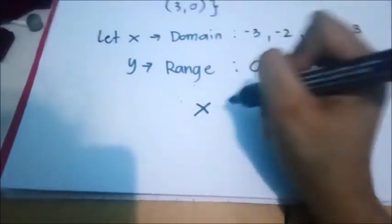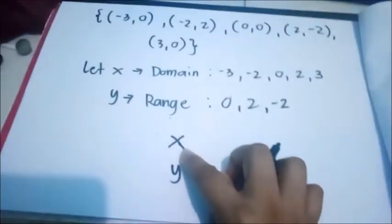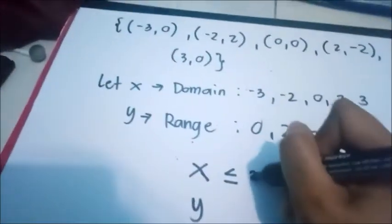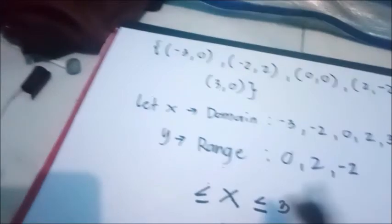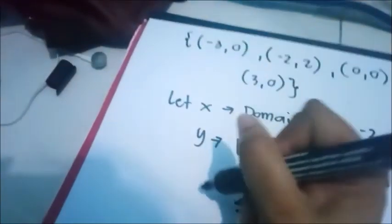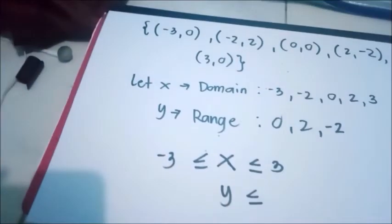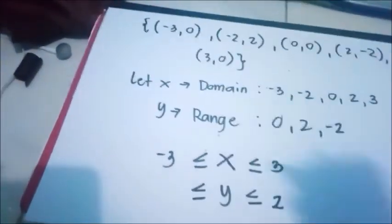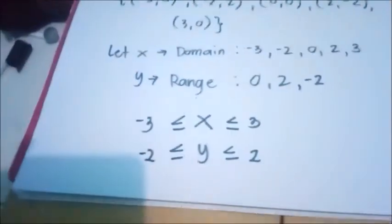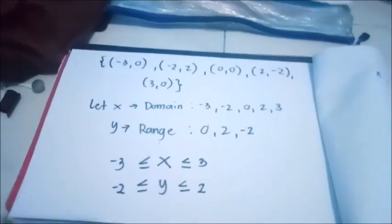Now let us have the value of all domain and the range. What is the maximum number of the domain? We have 3. And the minimum value of domain, we have negative 3. How about the range? The maximum number is 2, and the minimum value of range is negative 2. So this will be the domain and the range of the given example.